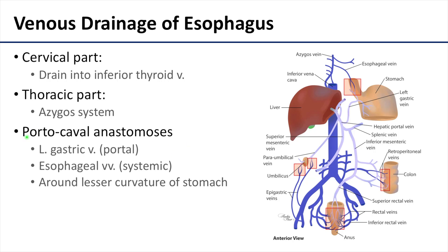The abdominal part of the esophagus is a site of portal-caval anastomoses — sites where the portal venous system communicates with the systemic or caval venous system. The main veins draining the inferior esophageal part are the left gastric veins, which are part of the portal system, as well as the esophageal veins, which are part of the systemic or caval system.